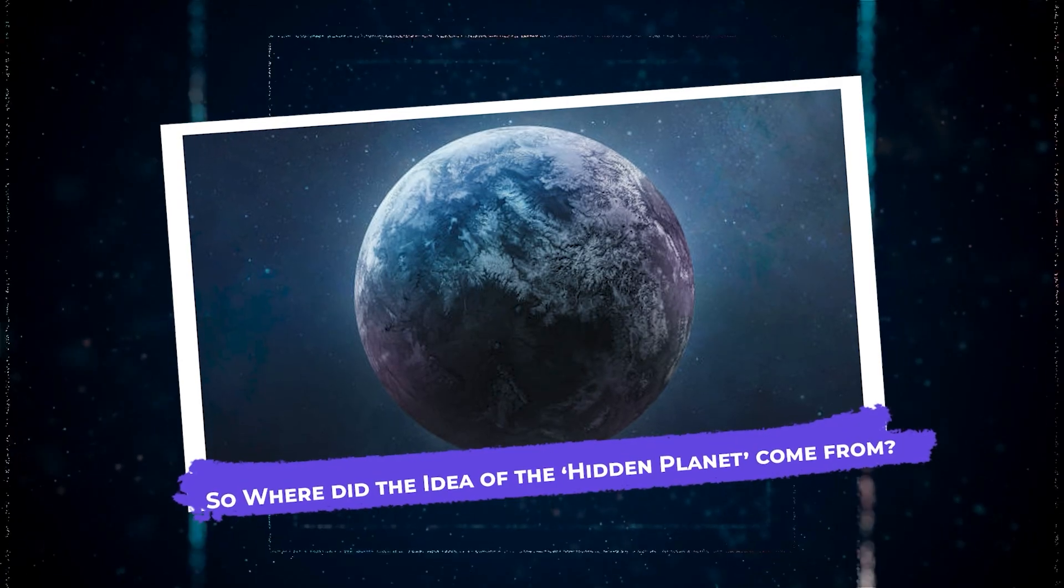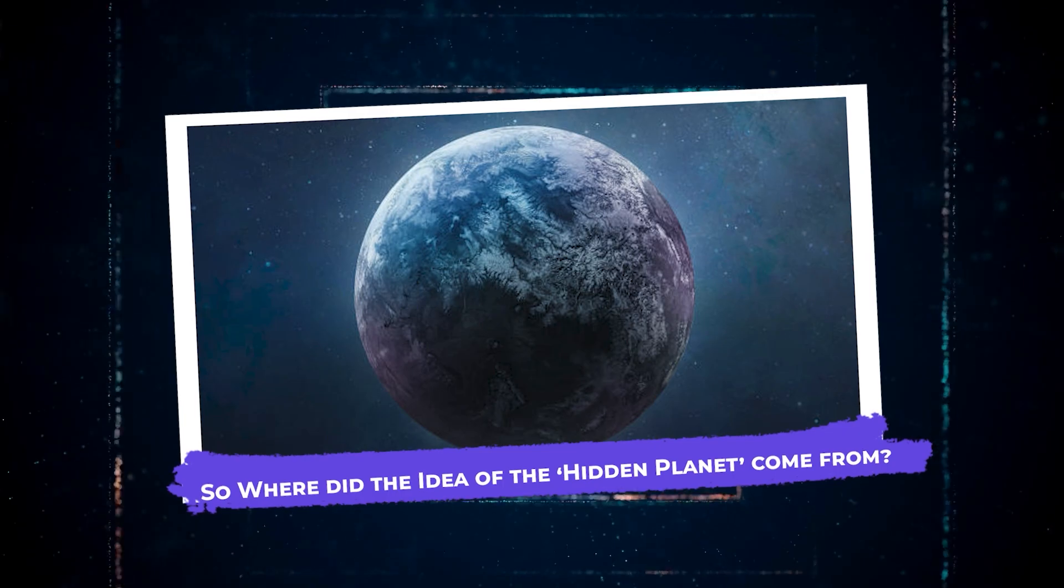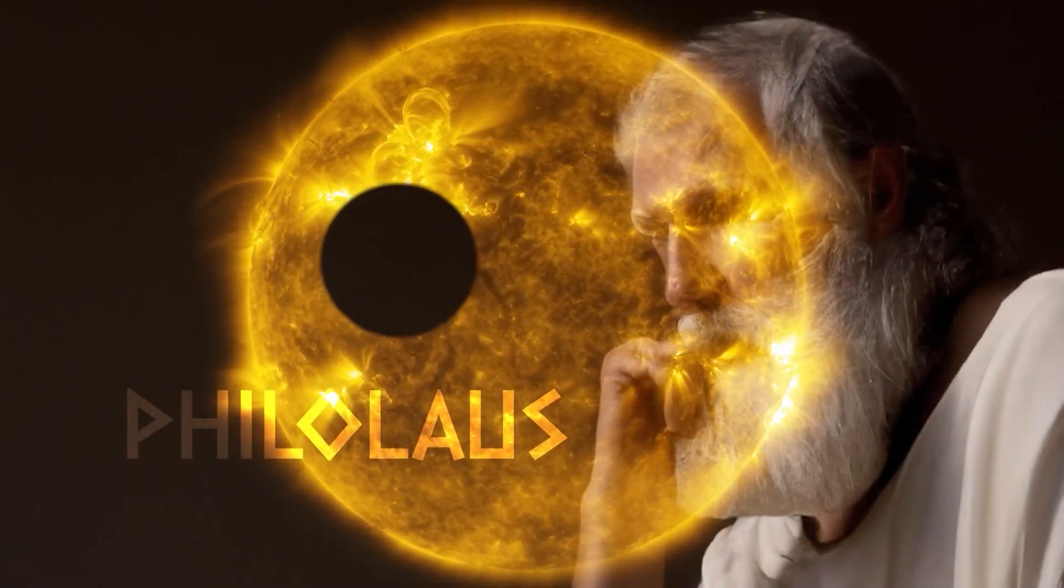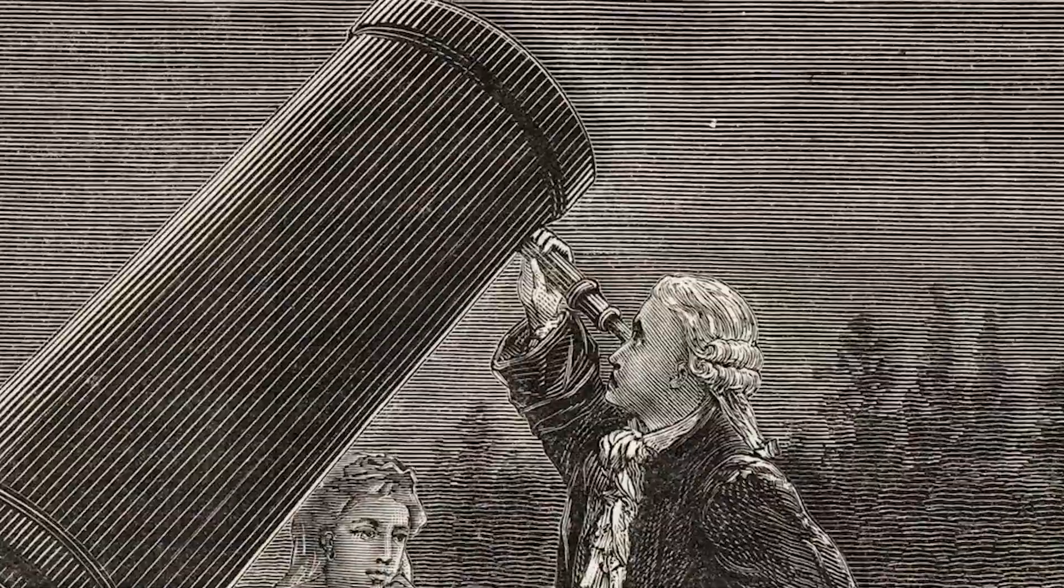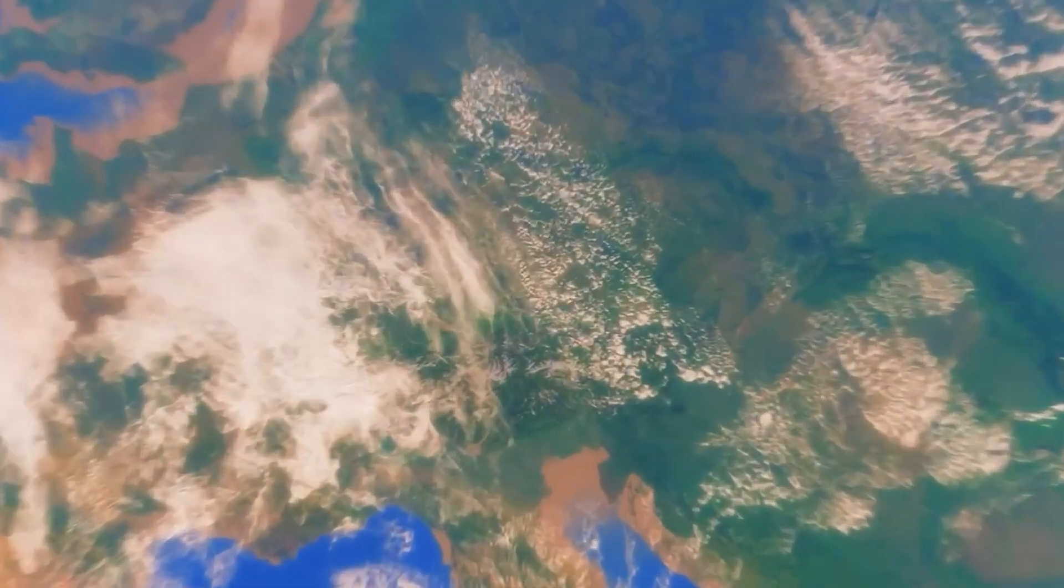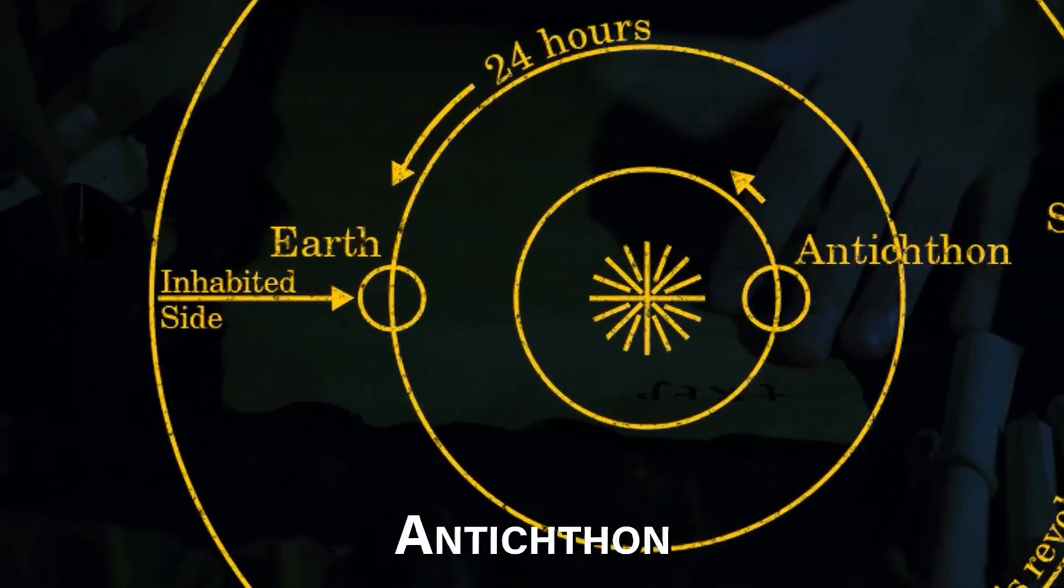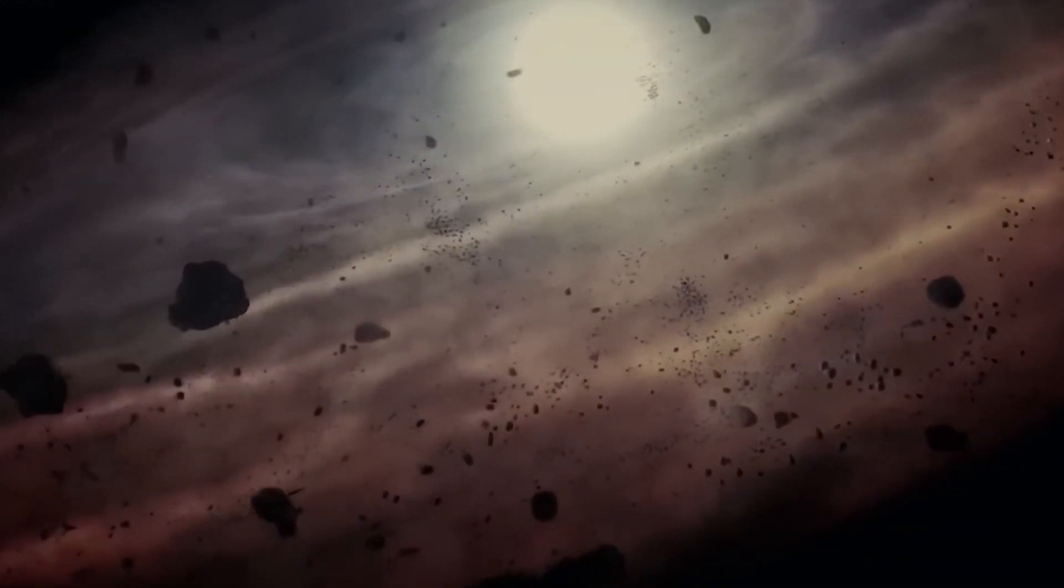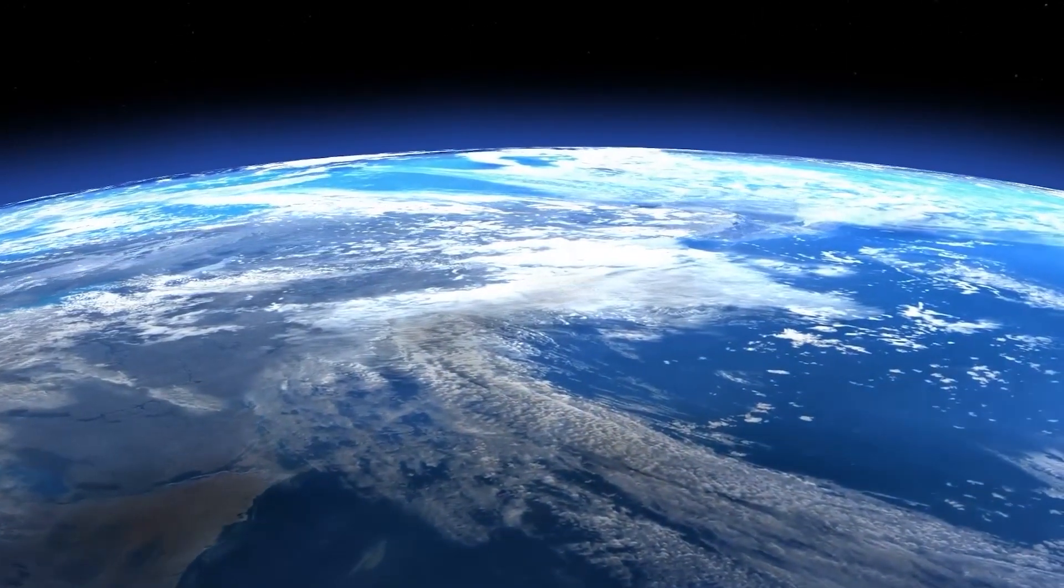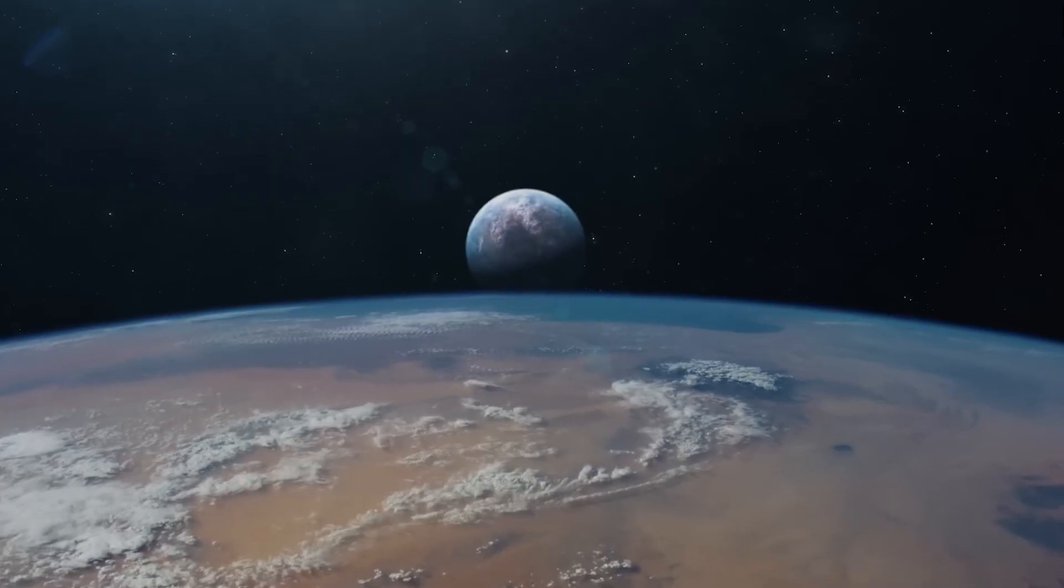So where did the idea of the hidden planet come from? About 2400 years ago, the Greek philosopher Philolaus came up with the theory of another planet much like Earth, but termed the Counter-Earth. He called this Counter-Earth Antichthon and described it as having an orbit that kept it permanently behind the sun. Antichthon, also known as the Counter-Earth, has been the subject of speculation and many ancient and scientific myths for ages.